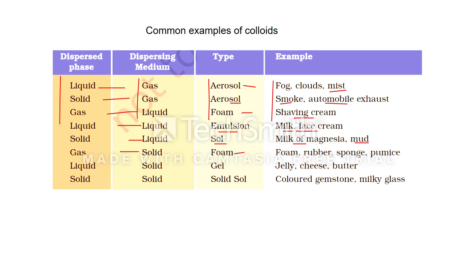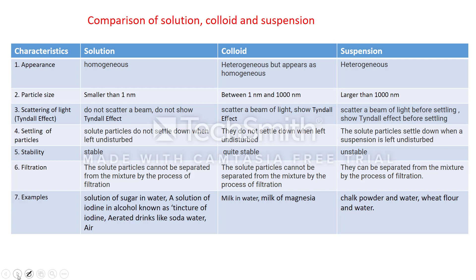Solid into liquid is called sol — examples: milk of magnesia and mud. Gas into solid is a foam — examples: foam rubber, sponge. Liquid into solid is called gel — examples: jelly, cheese, butter. Solid into solid is called solid sol — examples: colored gemstones, milky glass. Among these eight types, three are important: emulsion (liquid into liquid), sol (solid into liquid — remember 'sol' for solid in liquid), and gel (liquid into solid).